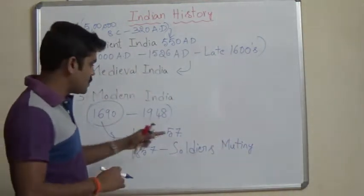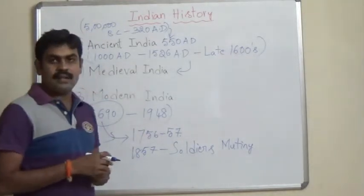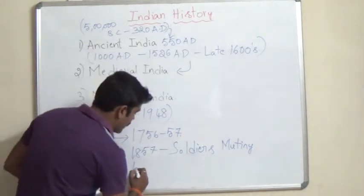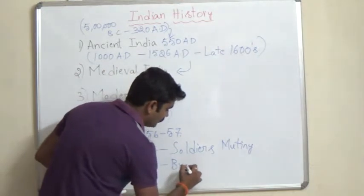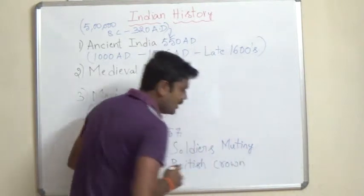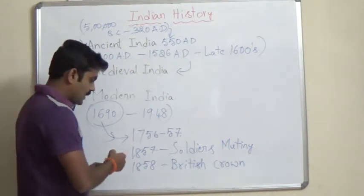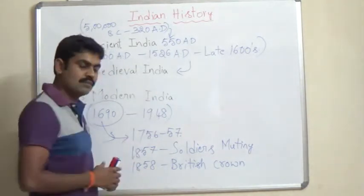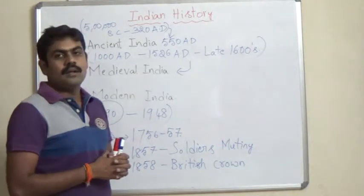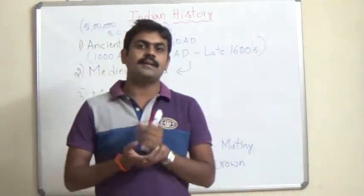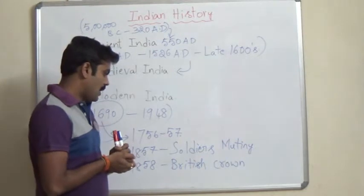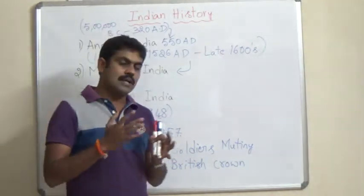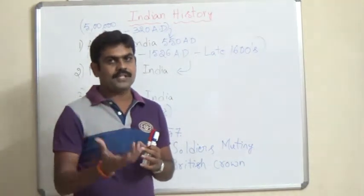In 1857, Bahadur Shah II was the last Mughal ruler who survived and gave a supportive hand in this soldiers' mutiny. After the war, the British Crown thought it was the failure and irresponsibility of the East India Company. So from 1858 onwards, direct rule of the British Crown took place in India. From 1858 onwards, modern thought and modern thinkers started their movements in India.